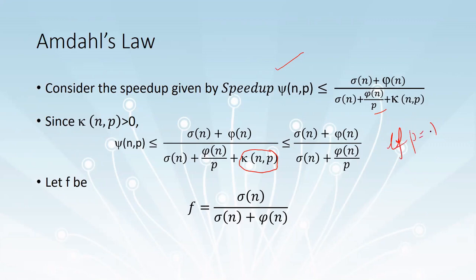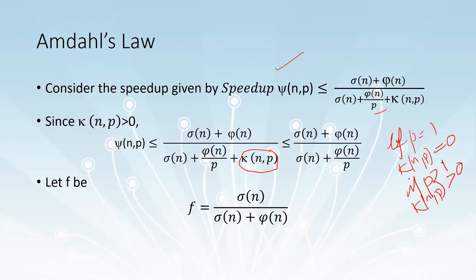If p is equal to 1, kappa of n, p will be 0 because there is no more than one processor and no communication is needed. But if p is greater than 1, kappa of n, p will always be greater than 0. So this term is always greater than 0 for a parallel program. If we remove this term from the denominator, the resultant will always be a higher value, since a divided by b plus c is always less than a divided by b.